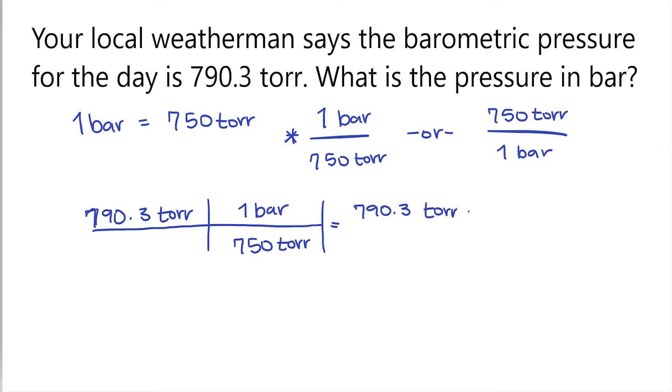Next we need to multiply our units. So we have torr times bar. Then on the bottom, we just have our 750 torr. Now because we have torr in the top and the bottom, those units are going to cancel each other out, leaving us with just bar, which is what the question wanted us to find.